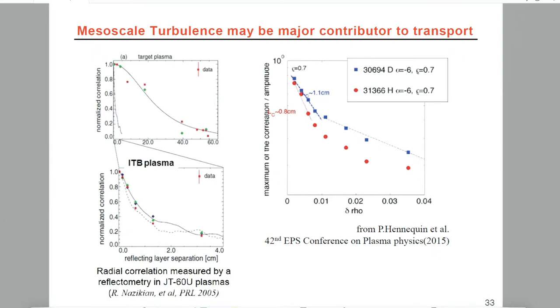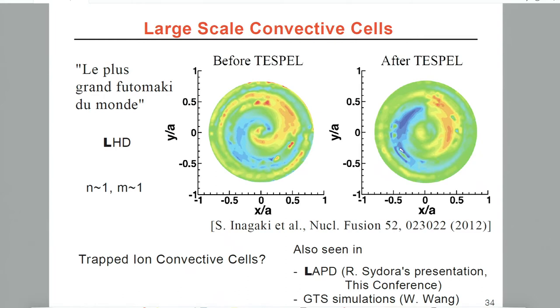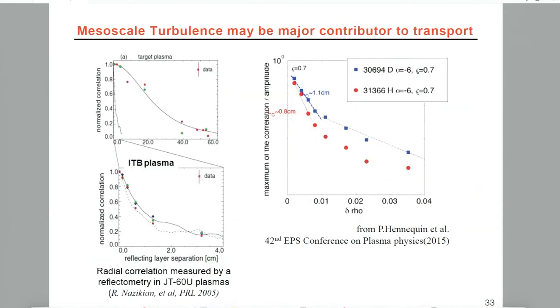More recently, Pascal Hennequin, a French scientist working on ASDEX Upgrade, a German machine, has seen these two scales—both microscale and mesoscale turbulence structures. One case is an American physicist working on a Japanese machine, another a French physicist working on a German machine, so I think there must be some truth in that because they both see this kind of structure.